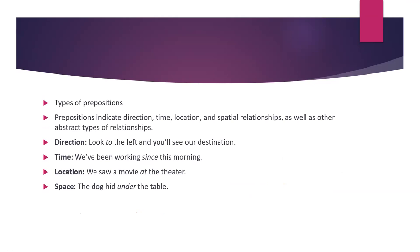Types of preposition: prepositions indicate direction, time, location, and spatial relationships, as well as other abstract types of relationships. Direction: 'Look to the left and you will see our destination.' Time: 'We have been walking since the morning.' Location: 'We saw a movie at the theater.' Space: 'The dog hid under the table.'